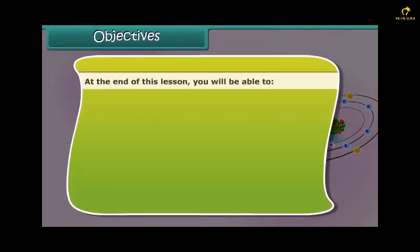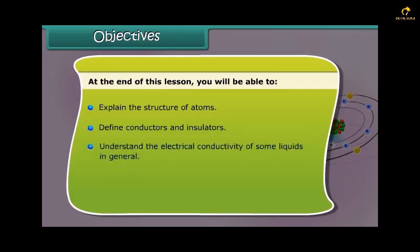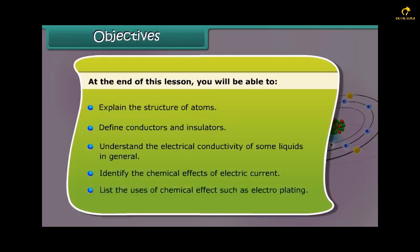Objectives: At the end of this lesson you'll be able to explain the structure of atoms, define conductors and insulators, understand the electrical conductivity of some liquids, identify the chemical effects of electric current, and list the uses of chemical effect such as electroplating.